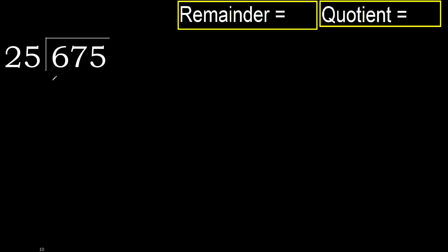675 divided by 25. 6 is less, therefore next — 67 is not less, therefore we work with 67. 25 multiplied by which number is nearest to 67 but not greater?